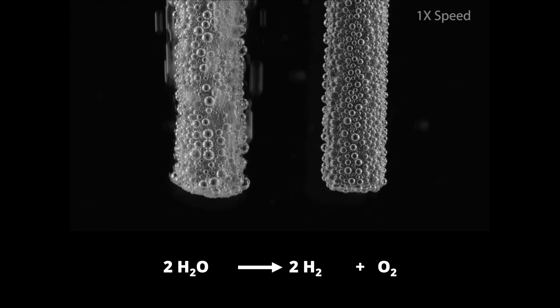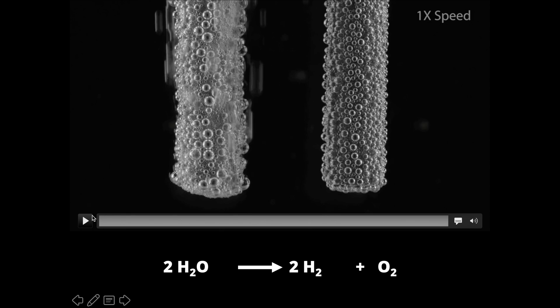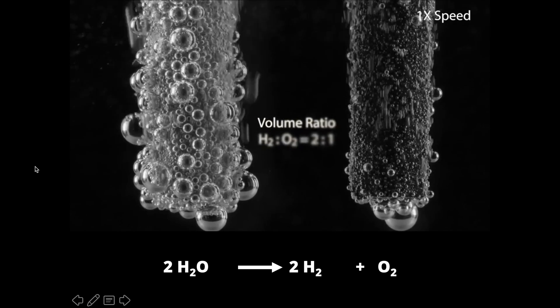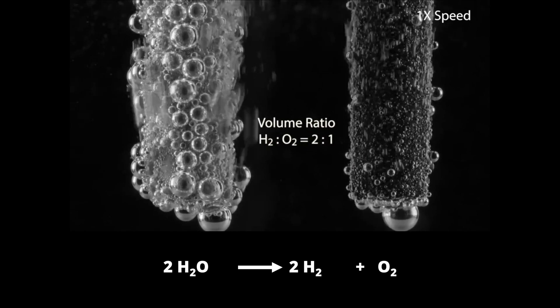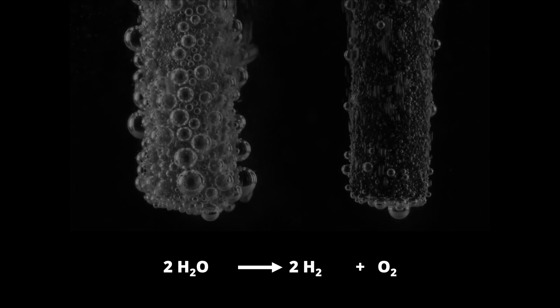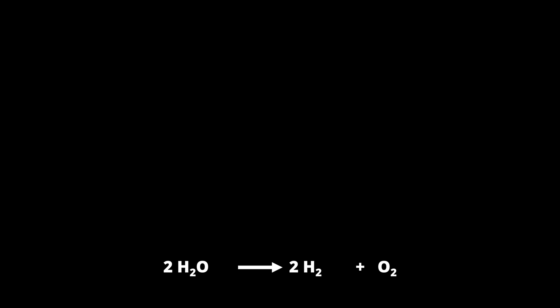Here is another example: when electricity is passed through water, hydrogen gas and oxygen gas are formed. Water is a compound in the pure liquid state, and the resulting two products are gases. This is what the chemical equation looks like with state symbols added.